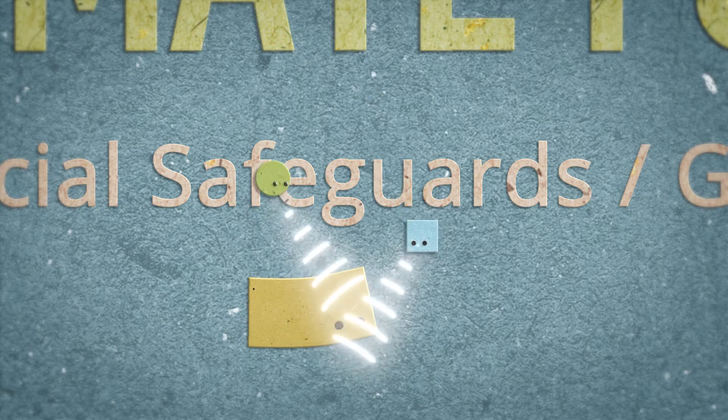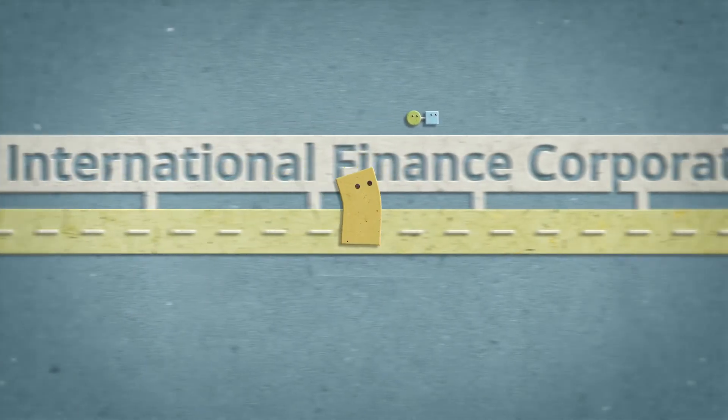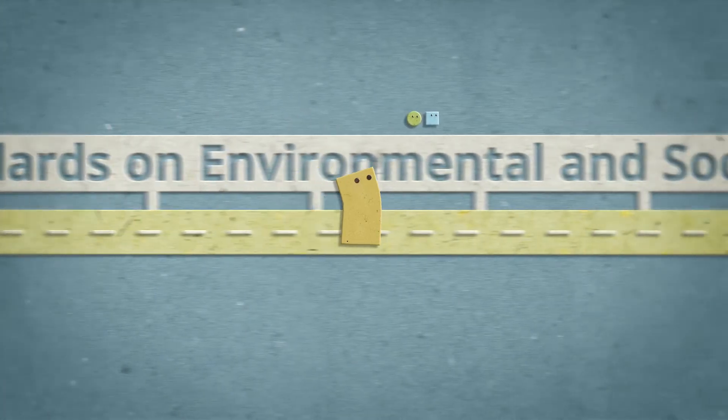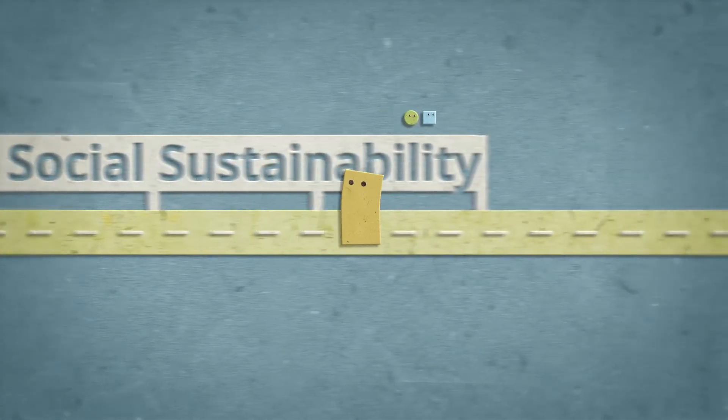The GCF Interim Environmental and Social Safeguards follow the International Finance Corporation's performance standards on environmental and social sustainability and are composed of the following.